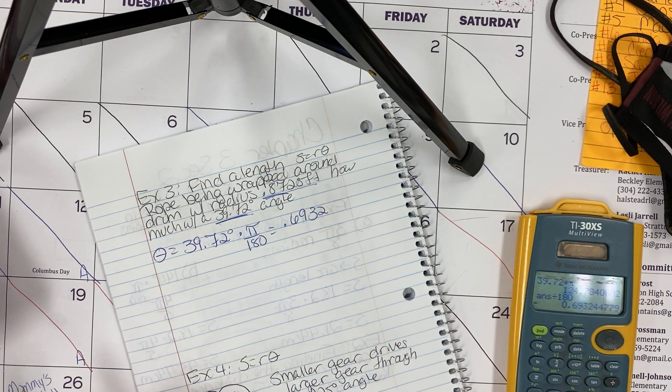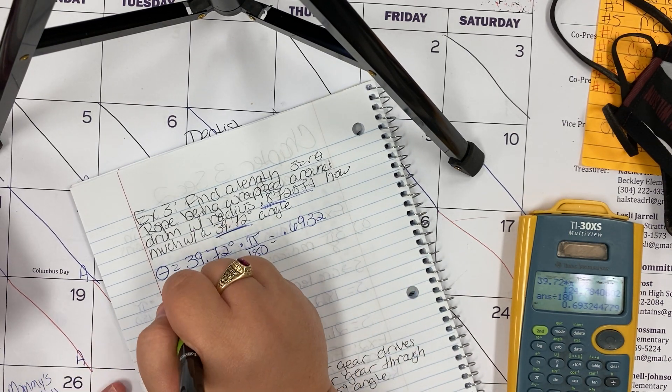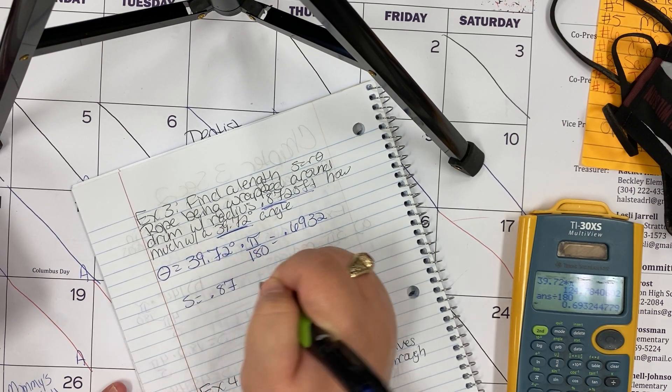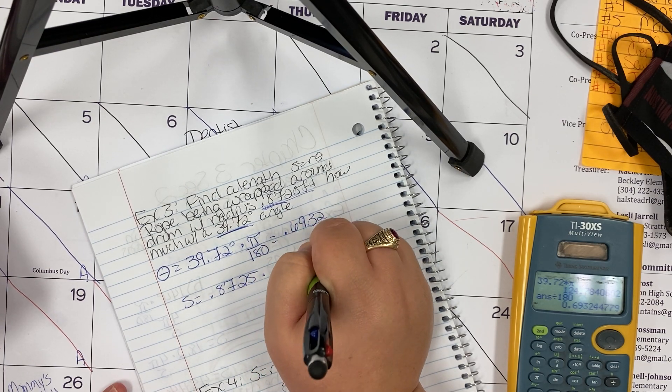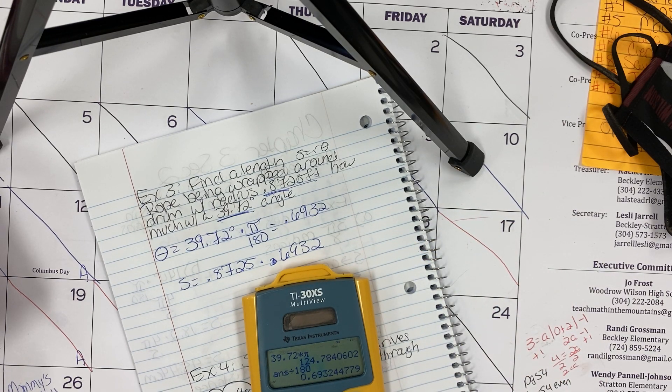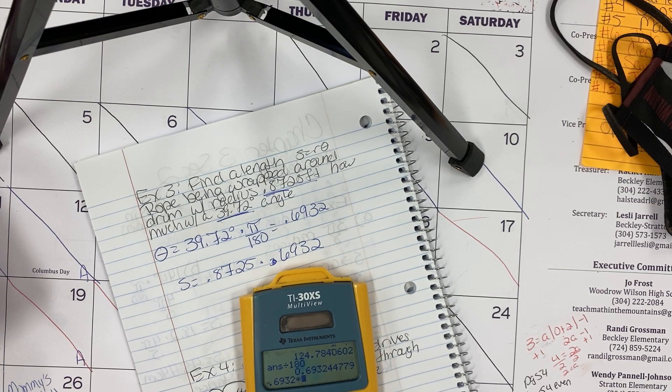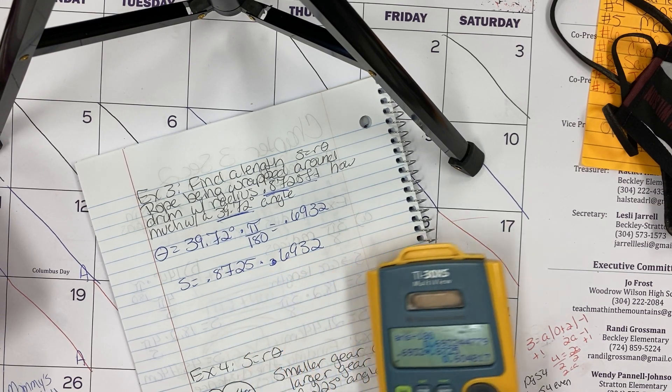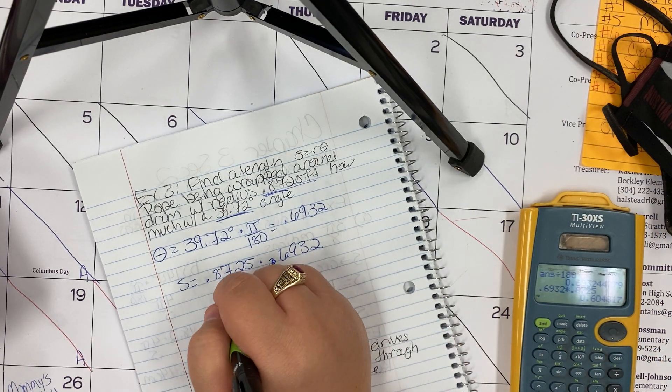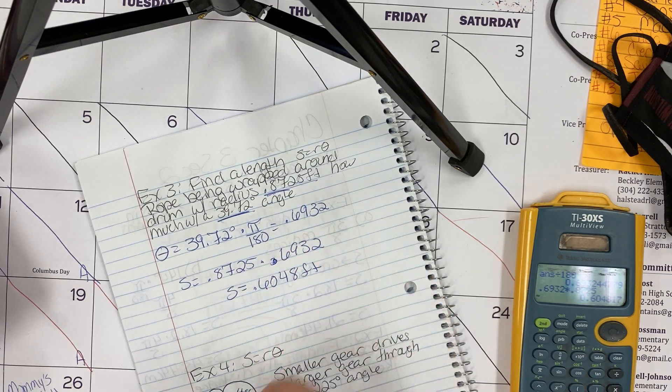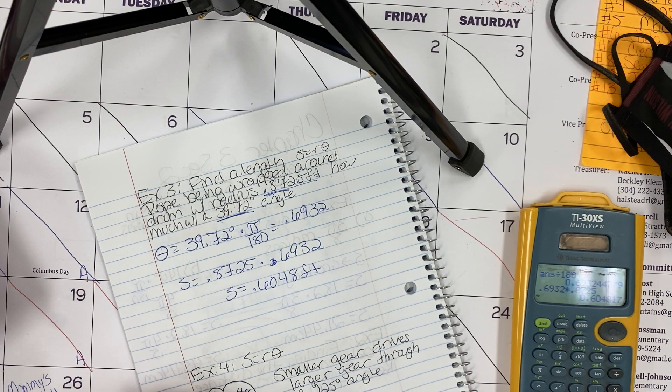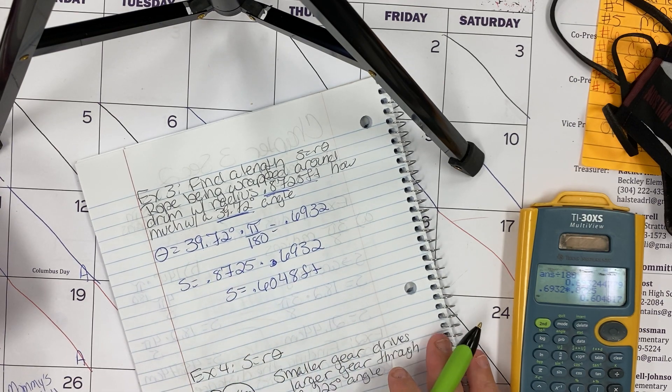Now I'm going to take s equals 0.8725, that's my radius, times 0.6932. That is going to give me a length of 0.6048 feet. So a little bit over half of a foot of rope is wound around the drum through that angle of 39.72 degrees.